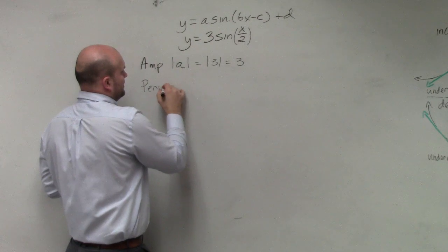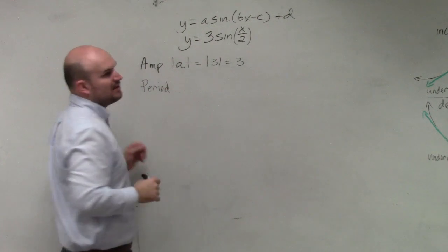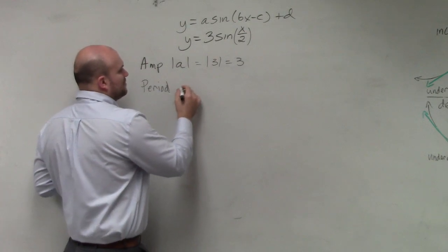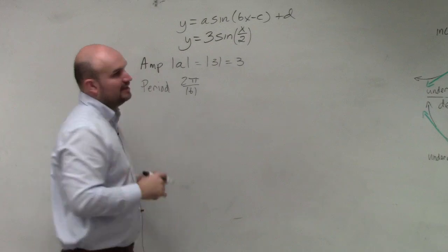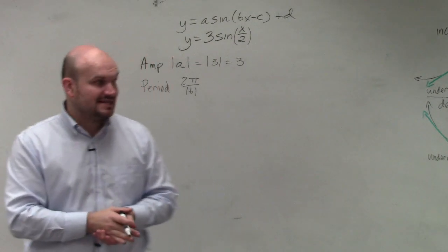The period. Remember the period is how long it takes the graph to repeat itself. The period is going to be 2π divided by absolute value of B. That is for your sine, cosine, cosecant, and secant.